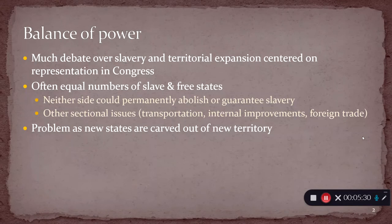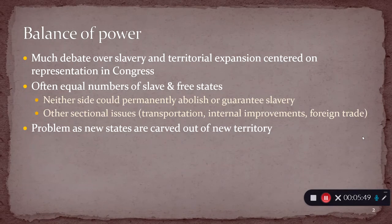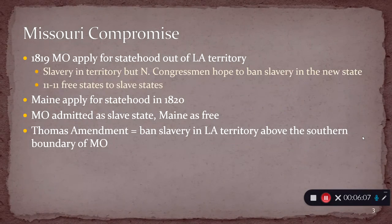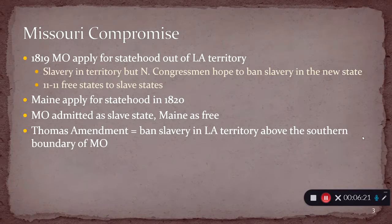The problem really becomes what do you do when each new state is going to be carved out of territory the country is adding. There are other sectional issues at work — government involvement in internal improvements, foreign trade, culture — but we're not going to touch on a lot of those given the nature of our class. The first time this really becomes a significant issue is with what's known as the Missouri Compromise. The United States adds the Louisiana Territory in 1803–1804, and it takes about 15 years before the first state is ready to be carved out of that territory: Missouri.